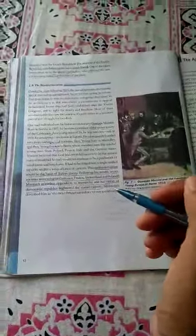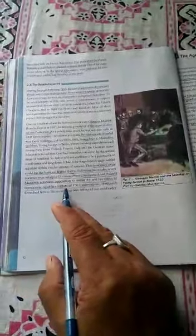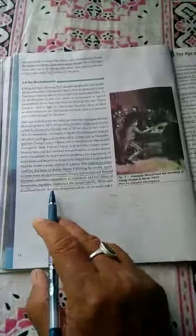Following his model, secret societies were set up in Germany, France, Switzerland, and Poland. Mazzini relentlessly opposed monarchy, and his vision of a democratic republic frightened the conservatives.